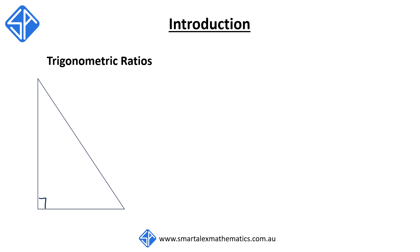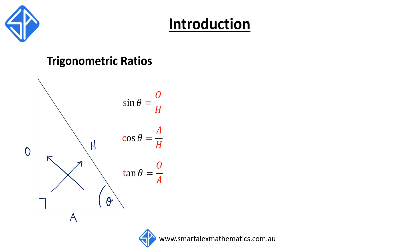Suppose we've got a right angle triangle. Here's the angle theta. The side opposite the right angle is known as the hypotenuse. The side opposite the angle theta is known as the opposite side, and the side next to the angle theta is the adjacent side. Using these labels, we also learned to memorize the ratios sine, cos, and tan using the acronym SOHCAHTOA.